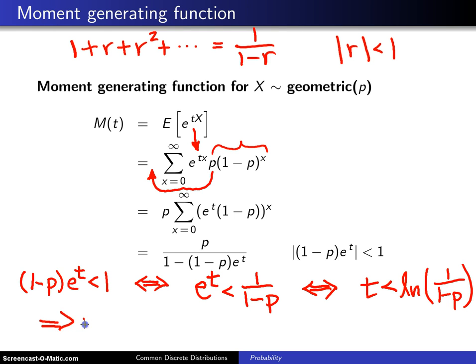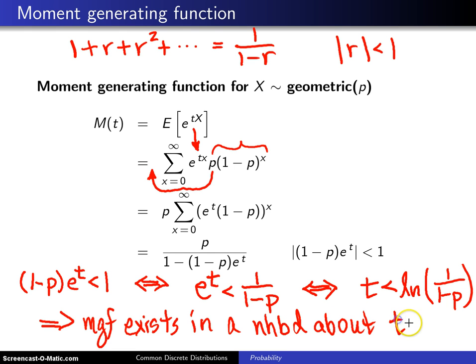Therefore, the moment generating function exists in a neighborhood about t equals 0, and therefore, we have a moment generating function, and this is it.